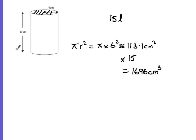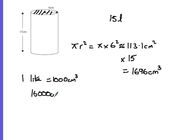Next, we need to convert the 15 litres: 1 litre equals 1000 cm³, so 15 litres equals 15,000 cm³. We then divide 15,000 by 1696, which gives roughly 8. So she can fill approximately 8 flower pots.